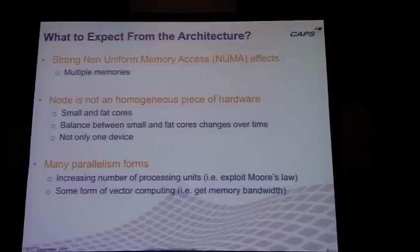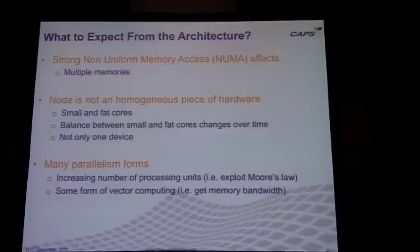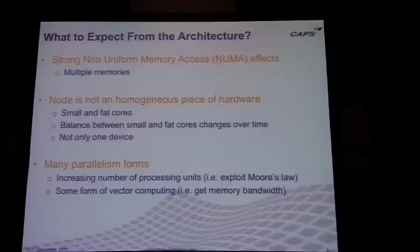From the software point of view, summarizing what we can expect from the architecture: first, you cannot assume uniform memory accesses. In the case of heterogeneous manycore, it's even worse — there will be really fast access on some memories and very slow accesses on others. This is because you have multiple memories. If you are accessing data on your GPU it's fast, but if you access through UVA the data of the CPU from inside the GPU, it's going to be very slow.